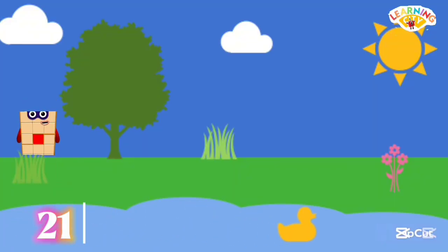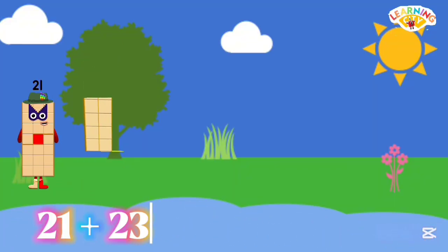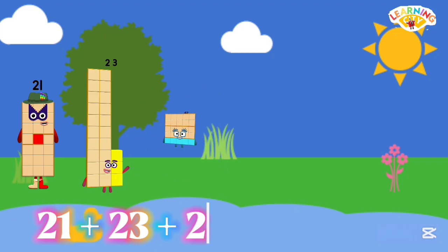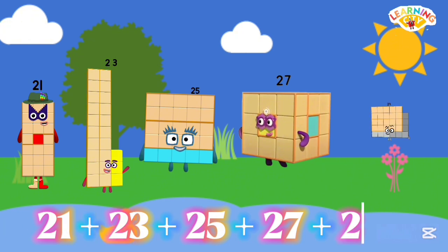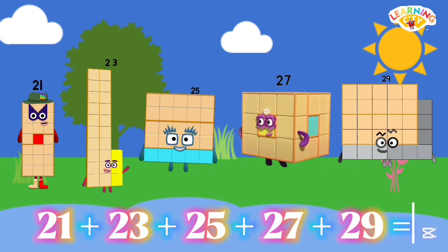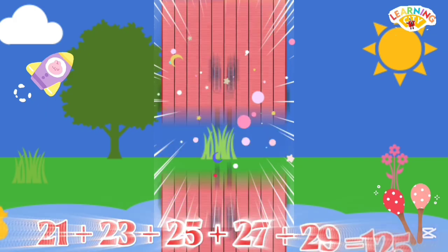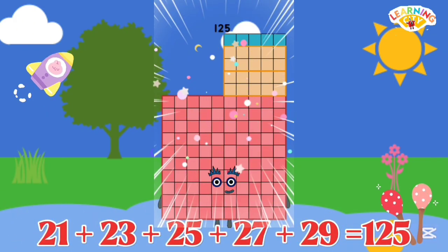21 plus 23 plus 25 plus 27 plus 29 equals 125.